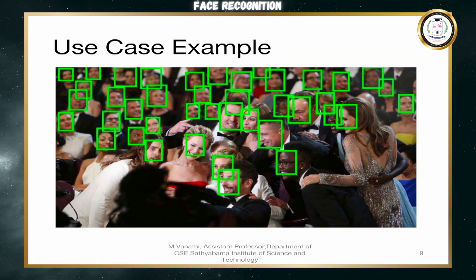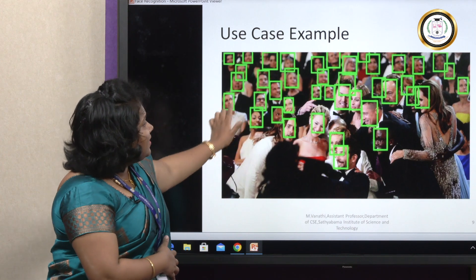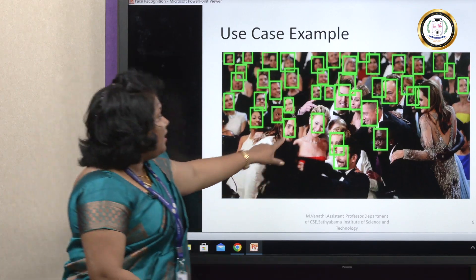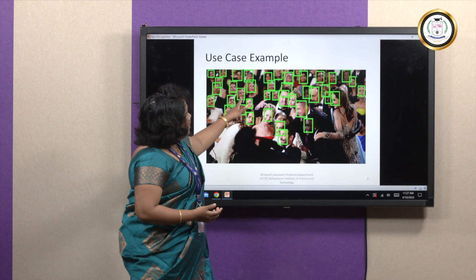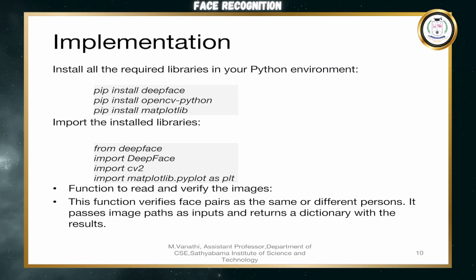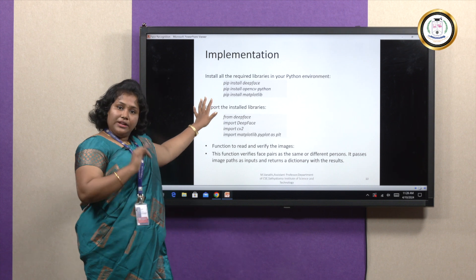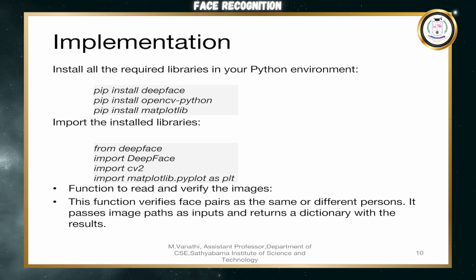Next we will take one example as a use case. This is an Oscar award function as an example — this is one image we get from the award function. You can see all faces are at different angles: right view, upper view, and some blurry images. For those images we are going to use DeepFace. We saw previously that DeepFace uses three modules: DeepFace, OpenCV, and Matplotlib. We are going to use DeepFace in Python. First we have to install DeepFace, OpenCV, and Matplotlib in Python, then import all the libraries.